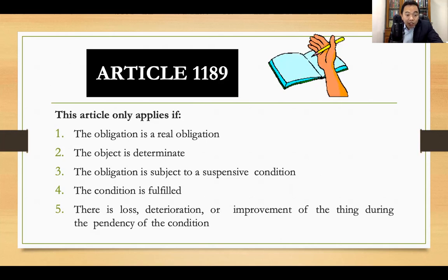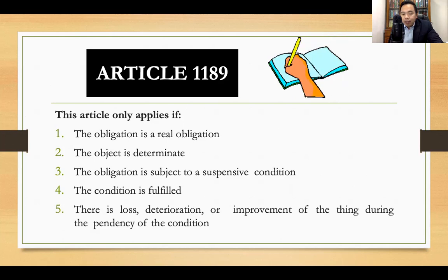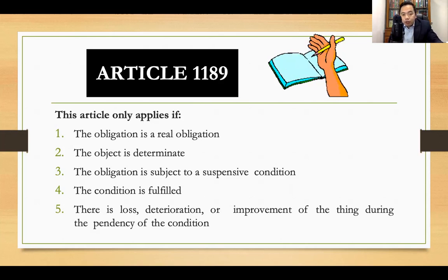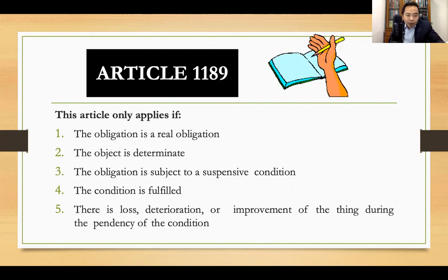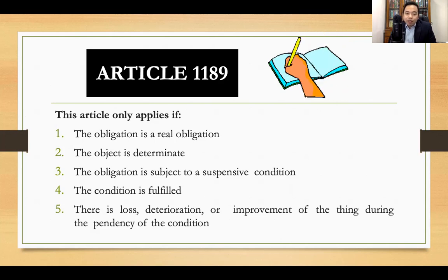Third, the obligation is subject to a suspensive condition. When you say suspensive condition, this pertains to a future and uncertain happening, the happening of which will give rise to the obligation. Fourth, the condition is fulfilled. And fifth, there is loss, deterioration, or improvement of the thing during the pendency of the condition. Article 1189 will apply only if the loss, deterioration, or improvement — what I call LDI — happened during the pendency or before the happening of the condition.